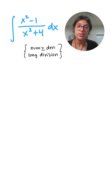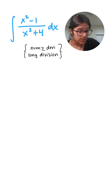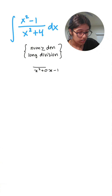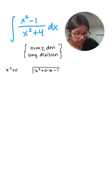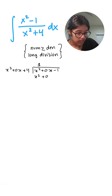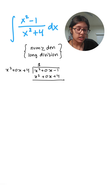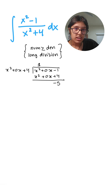So let's actually do that. We have x² + 0x - 1, and we're dividing that by x² + 0x + 4. Subtracting those two, we're left with -5.